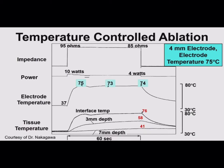This slide from Hiroshi Nakagawa shows that in the past, with non-irrigated catheters, we often did temperature-controlled ablation — setting the maximum temperature, here 75 degrees. We don't set it to 100 because we're underestimating the tissue-electrode interface temperature since our thermistor is proximal to the electrode. So with a 4-millimeter electrode set to 75 degrees, we deliver energy and heat the electrode to about 75 degrees. The power here is relatively low — 10 watts — and when using temperature control, the system automatically decreases power to maintain that temperature, giving a small amount of power and heating it up to 75 degrees to create about a 3-millimeter lesion.